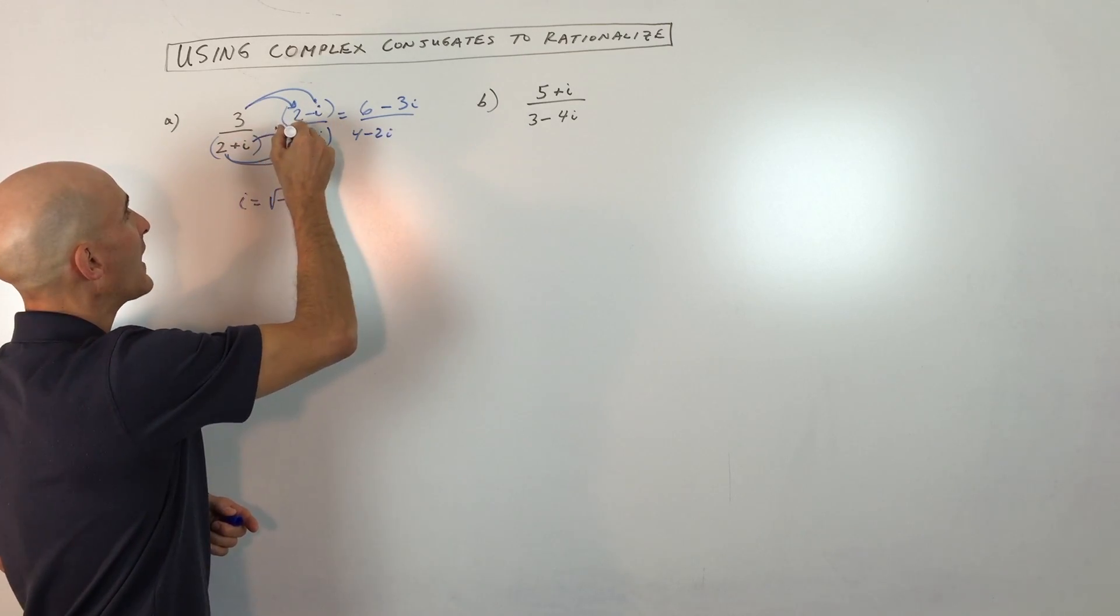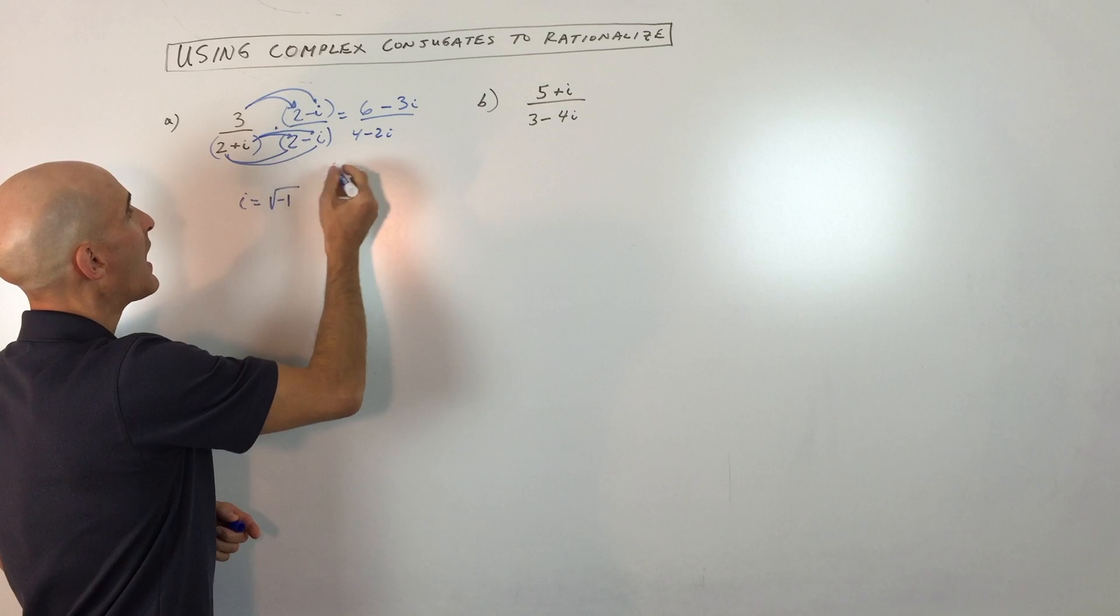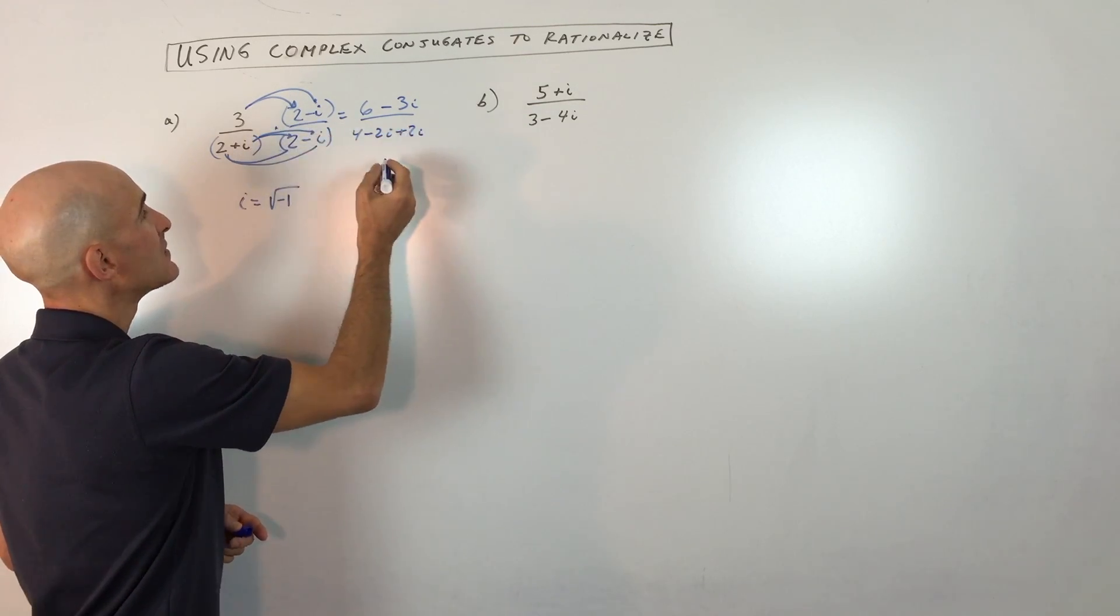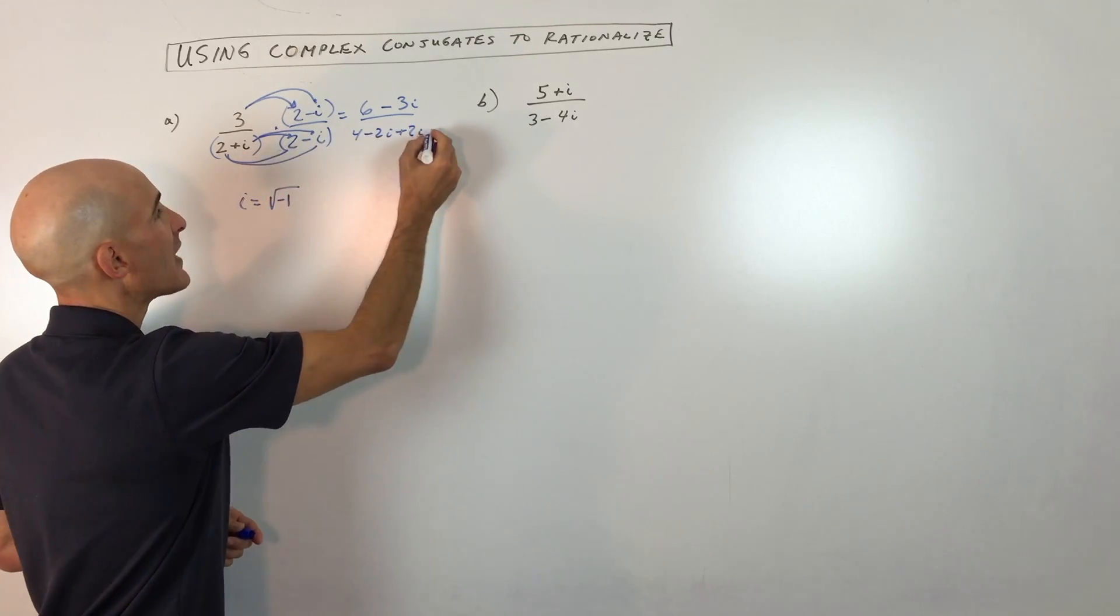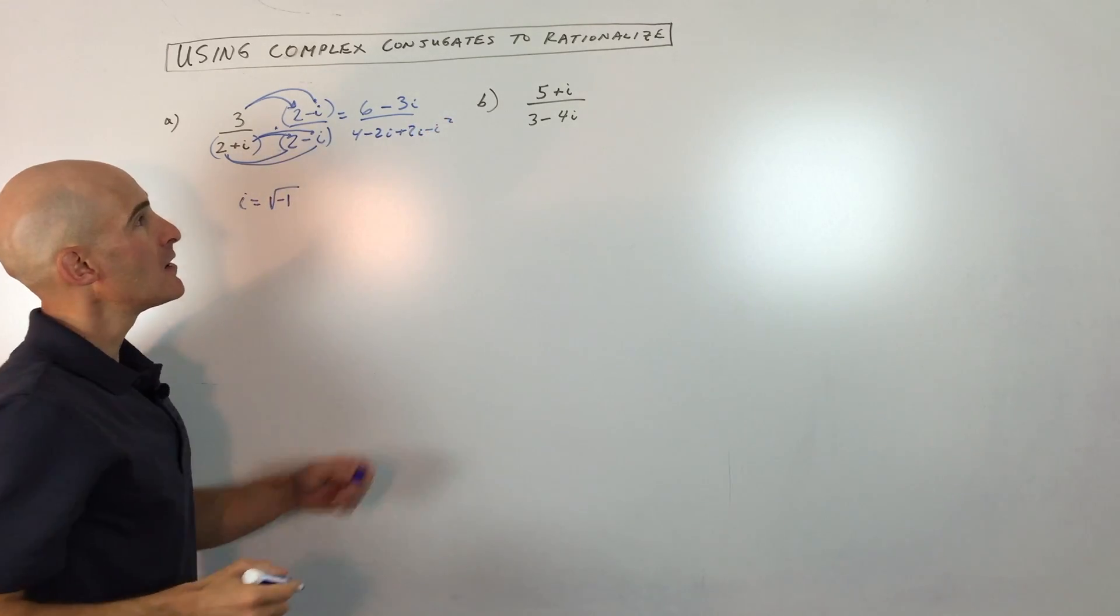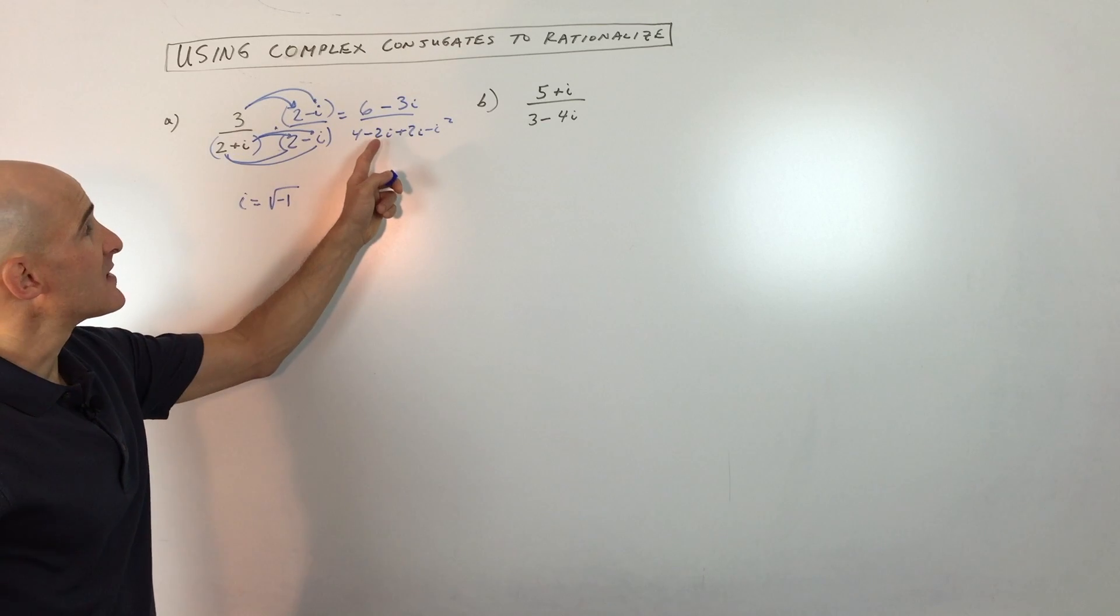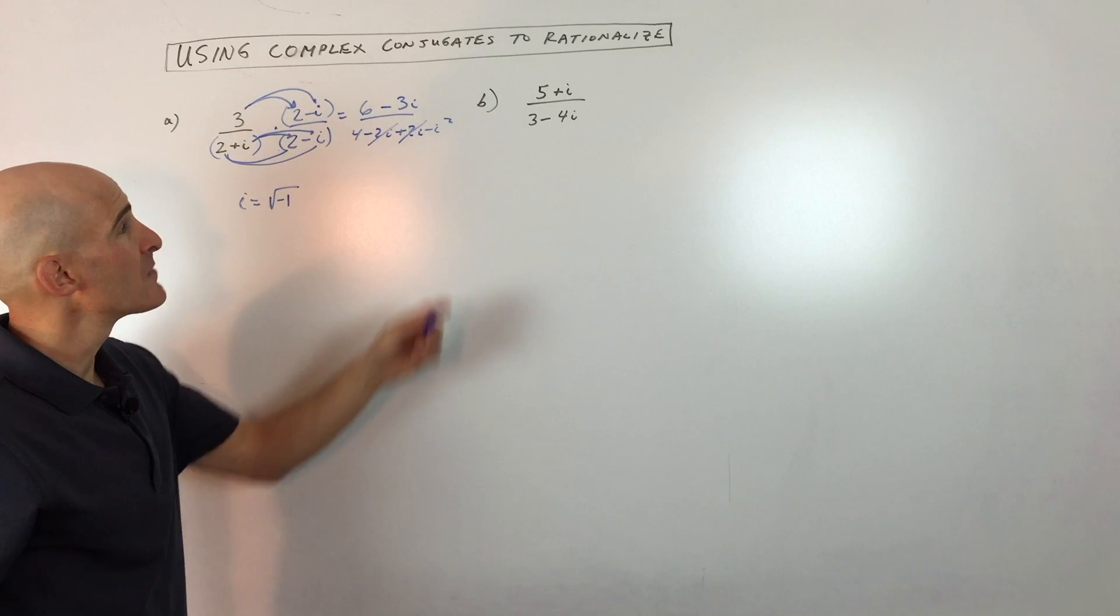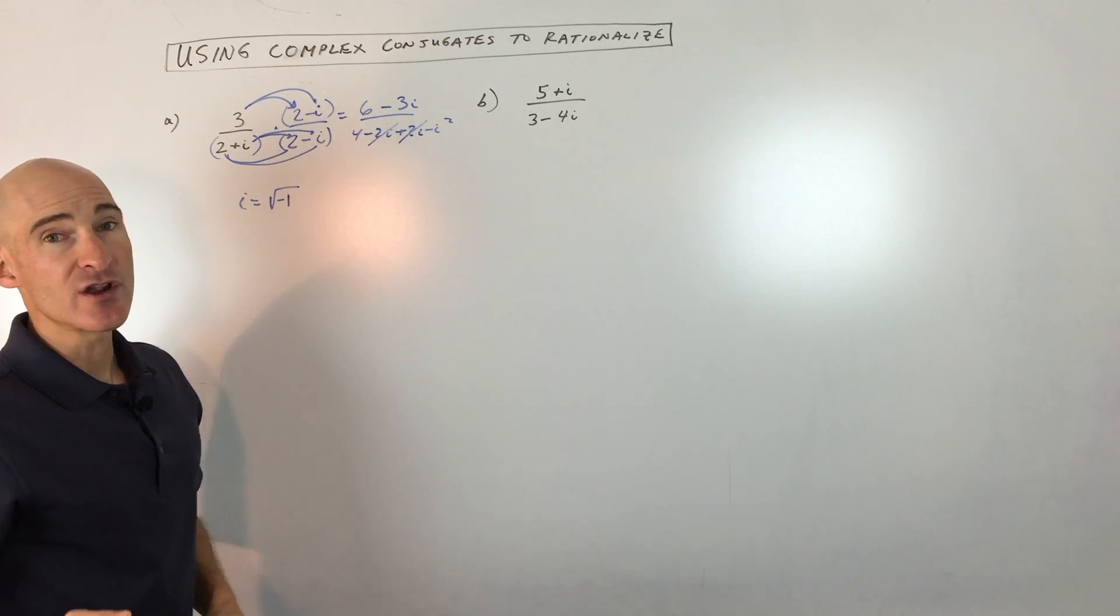And then i times negative i is negative i squared. So what you notice here right away is that the negative two i and the positive two i, those cancel because one's positive, one's negative. And then we have this i squared here.